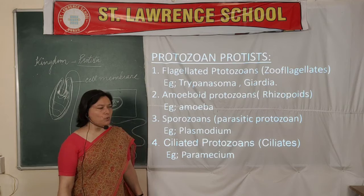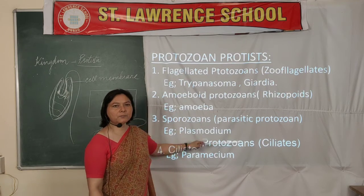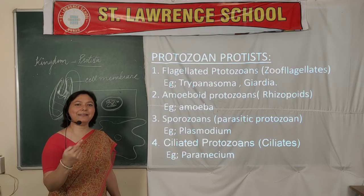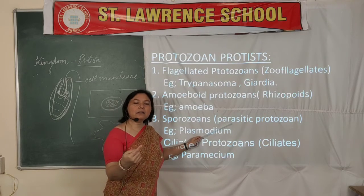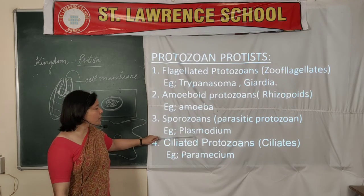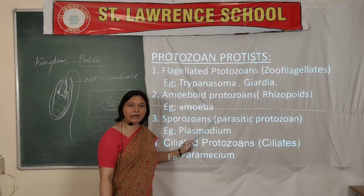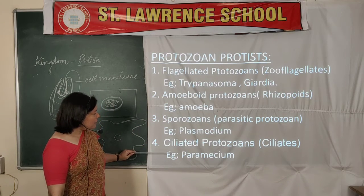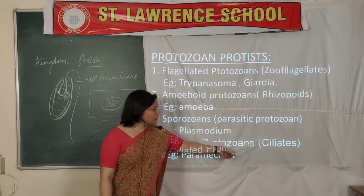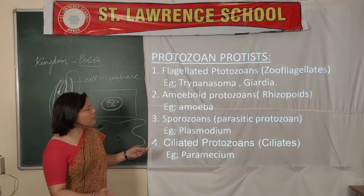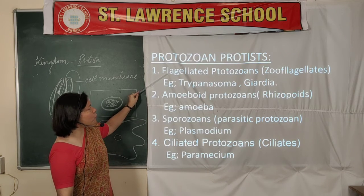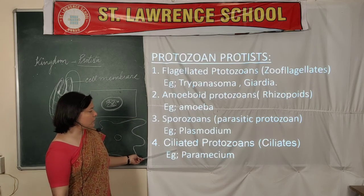The third category is Sporozoans — parasitic forms that live on other living organisms (unlike saprophytes which depend on dead matter). They include Plasmodium, which is responsible for causing malaria and many other problems. The fourth category is Ciliated Protozoans, commonly called ciliates — they bear cilia. Example is Paramecium. So the four sub-categories of Protozoan Protists are: Flagellated, Amoeboid, Sporozoan, and Ciliated.